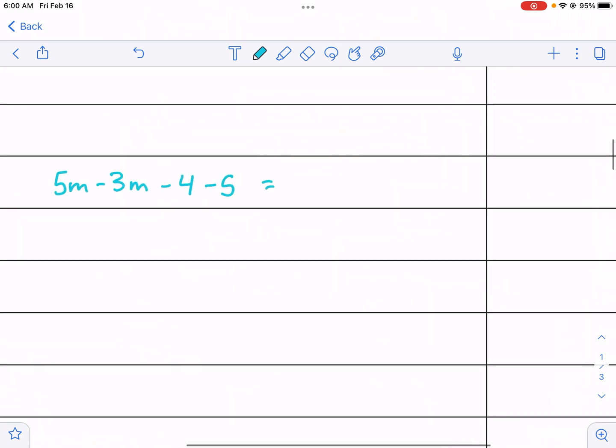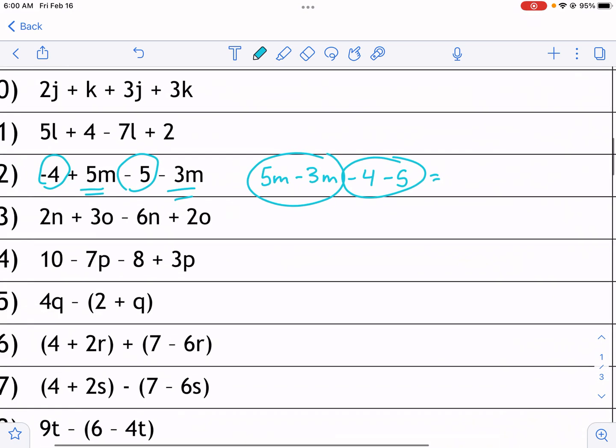So we have five m minus three m, right there, first step 2m, and then negative four minus five, that gives me negative nine, or just minus nine at the end.